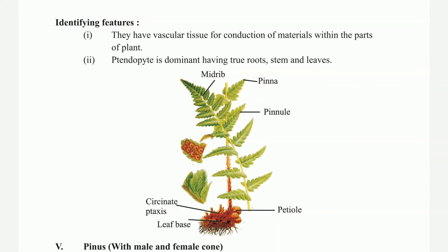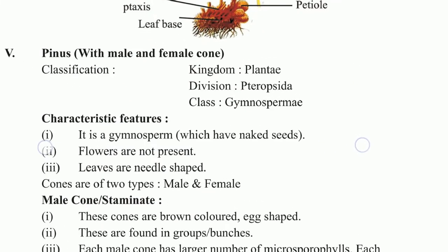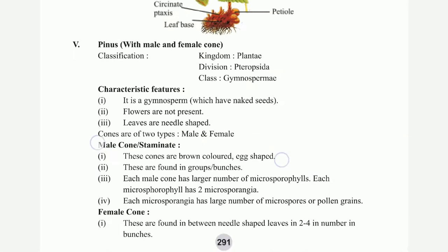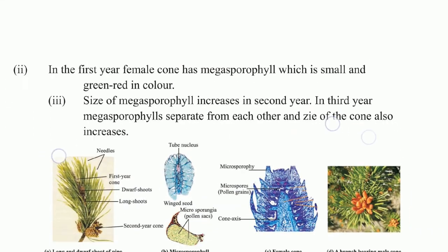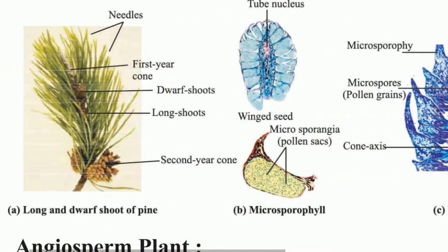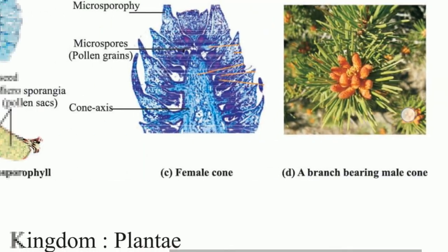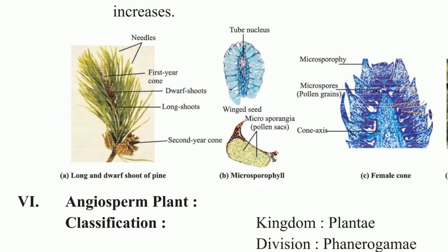Identifying features of fern: they have vascular tissue for conduction of material. Sporophyte is dominant, having true vascular tissue in stems and leaves. Then Pinus: classification, characteristic features — male cone (staminate), female cone. Diagram shows branch bearing male cone, female cone, microsporophyll, long and short shoots of pine.